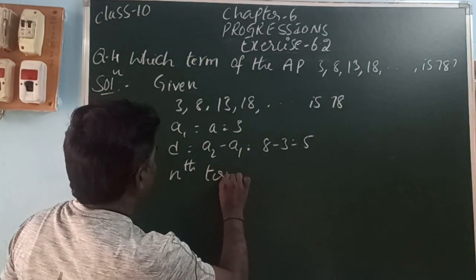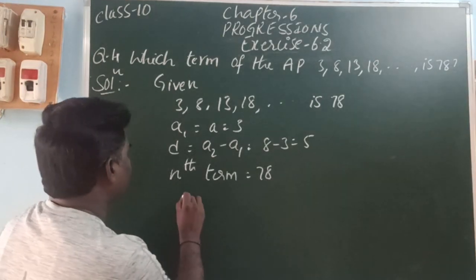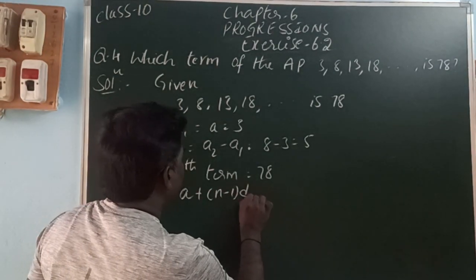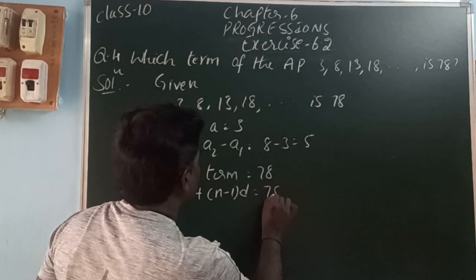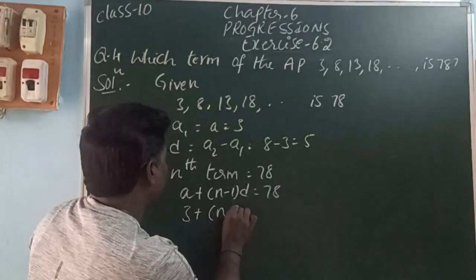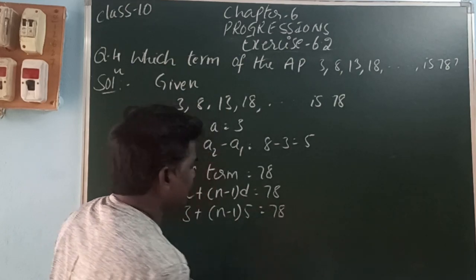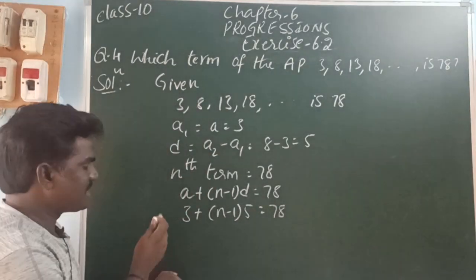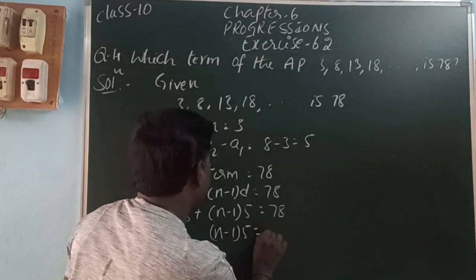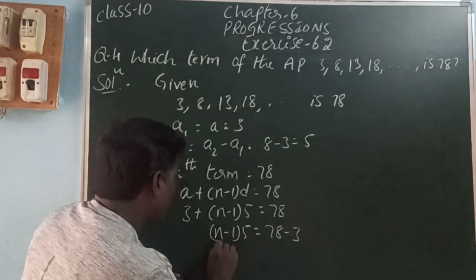Let us take the nth term is 78. What is the nth term formula? A plus n minus 1 into D is equal to 78. Here A is 3, so 3 plus n minus 1 into D which is 5 is equal to 78. So 3 is going to the other side as minus.